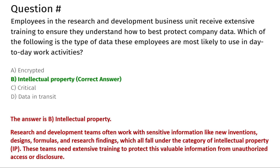The next question: employees in the research and development business unit receive extensive training to ensure they understand how to best protect company data. Which of the following is the type of data these employees are most likely to use in day-to-day work activities? Option A: encrypted. Option B: intellectual property. Option C: critical. Option D: data in transit.